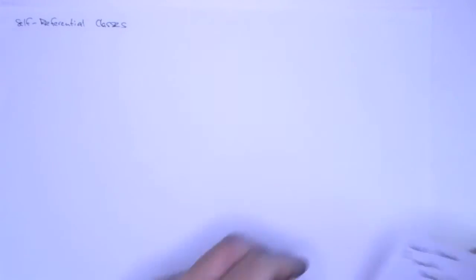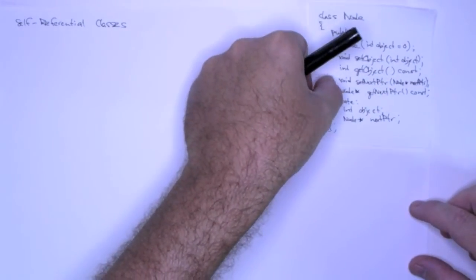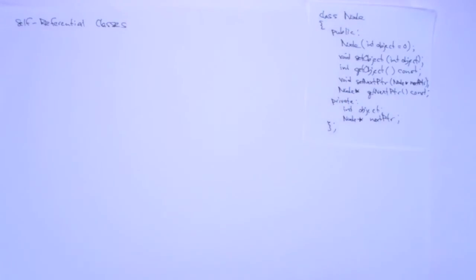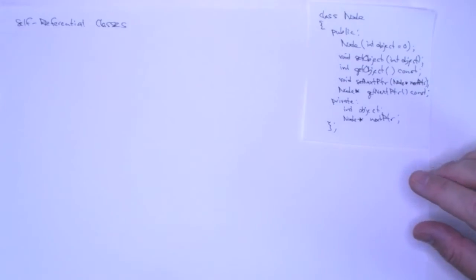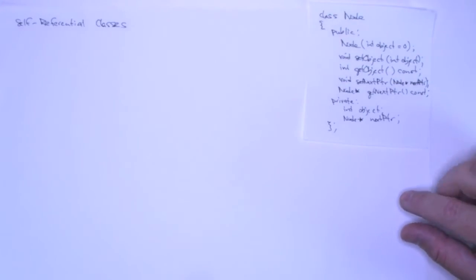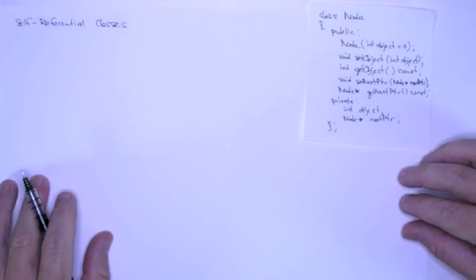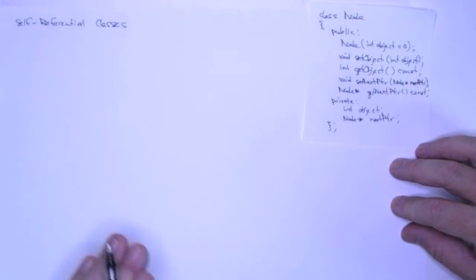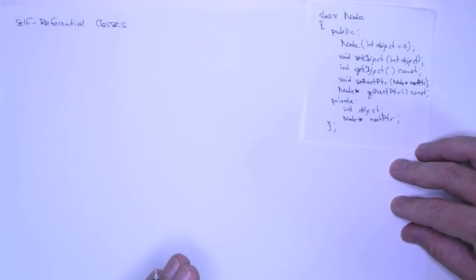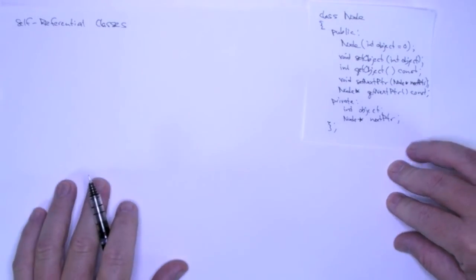Now we're going to look at dynamically allocating our self-referential class. Here's our little node class again. I want to get away from the statically allocated nodes from the previous example, and we're going to do it all through new and dynamic allocation.